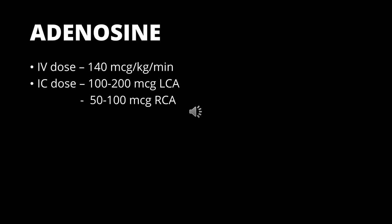Adenosine can be given both intravenously and intracoronary. IV adenosine has simple weight-based dosing at 140 micrograms per kg per minute. IV adenosine is the preferred hyperemic agent for evaluation of ostial lesions and for assessment of diffuse disease. Adenosine can also be administered intracoronary at a dose of 50 to 100 micrograms in the right coronary artery and 100 to 200 micrograms in the left coronary artery for maximal hyperemia.